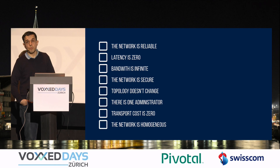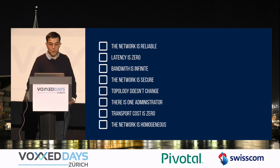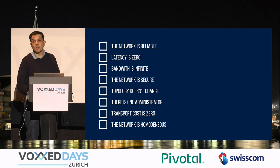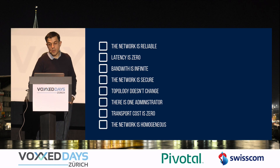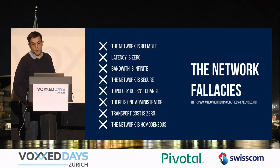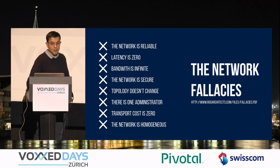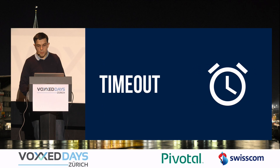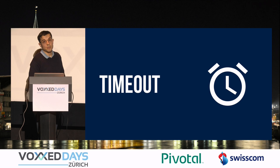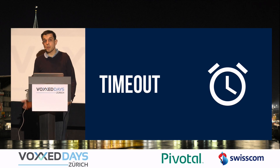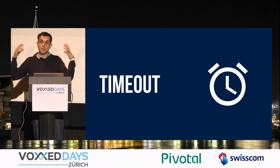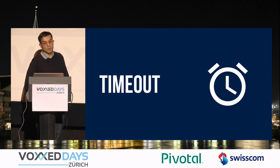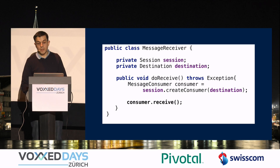Latency is zero — not true. You will have performance problems if you have too many hops in your application. Bandwidth is infinite — even with the biggest bandwidth, you're still constrained by the network. This has been published since 1994 in the network fallacies. Starting with distributed architectures, the first problem you're going to have is timeouts. Timeouts can happen everywhere and will likely not happen in a monolithic application. But as soon as you start working with microservices, you are likely going to hit timeouts.